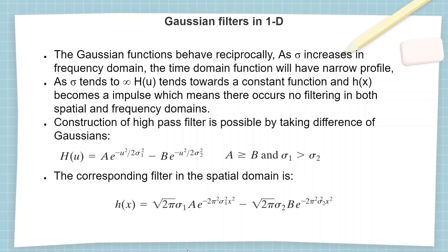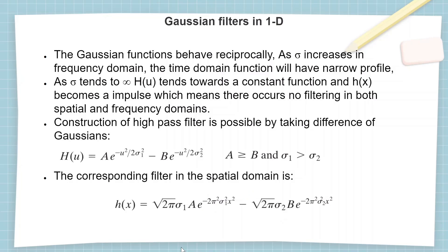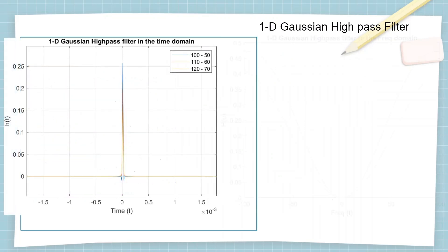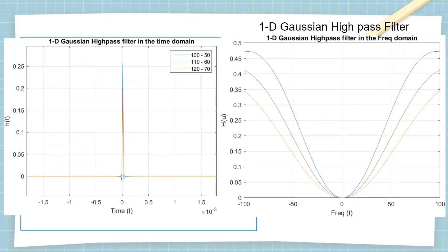Gaussian high-pass filters can be obtained by taking the difference of two Gaussian filters satisfying the conditions a ≥ b and σ₁ > σ₂. The equation is h(u) = A·e^(−u²/2σ₁²) − B·e^(−u²/2σ₂²). The corresponding spatial domain filter follows similarly. Gaussian high-pass filters follow the same analogy as low-pass filters: as σ grows the bell curve width increases in the frequency domain whereas it narrows in the time domain.